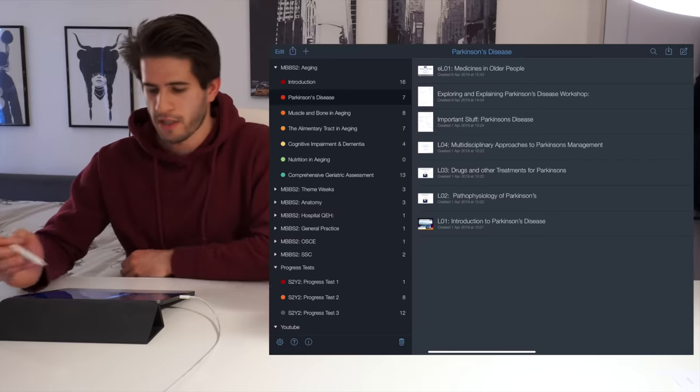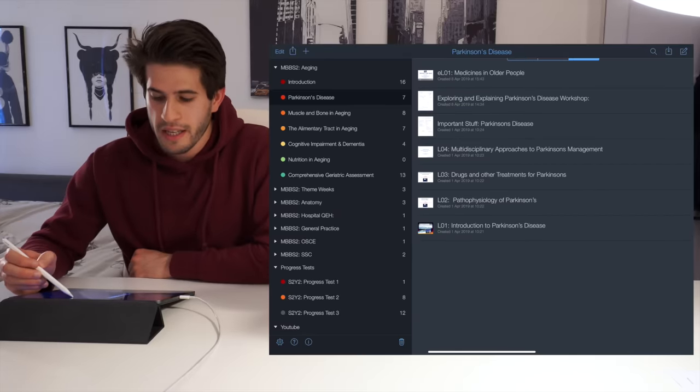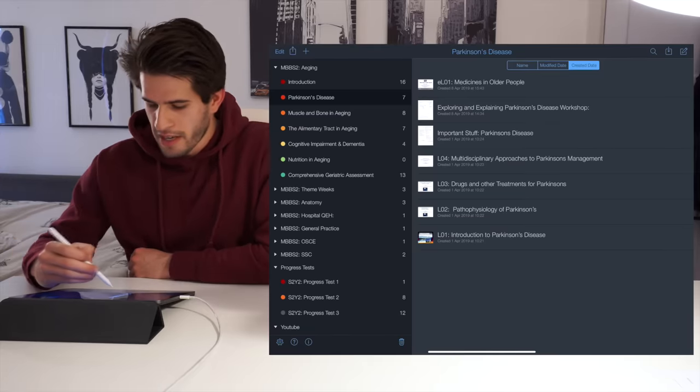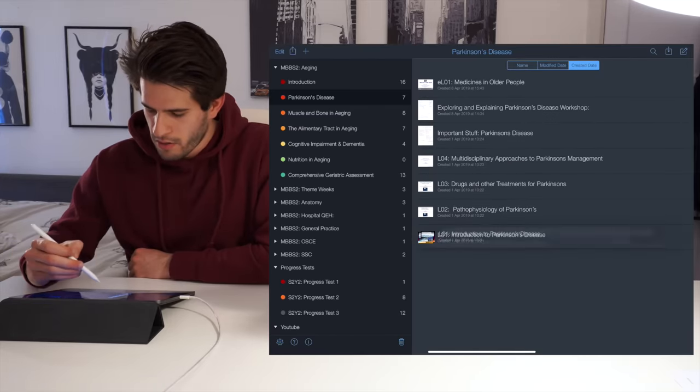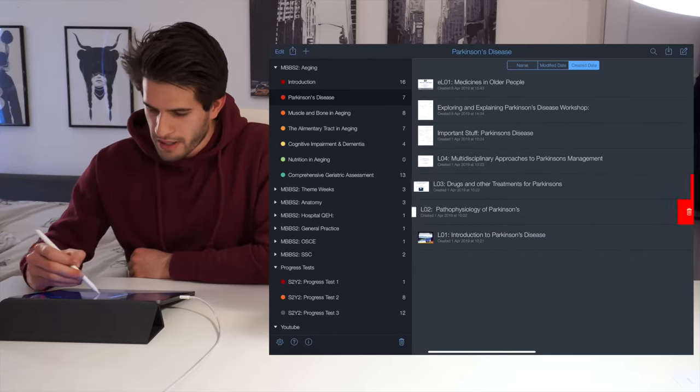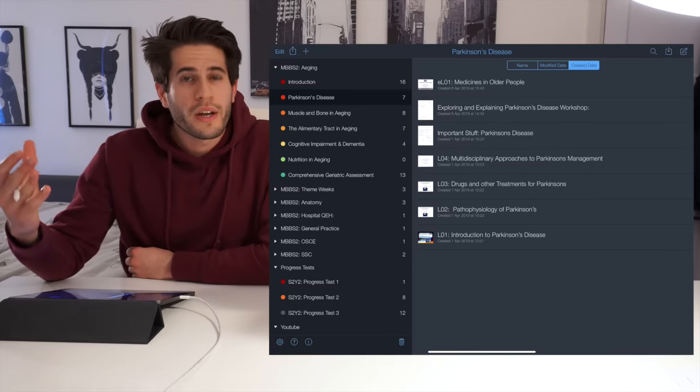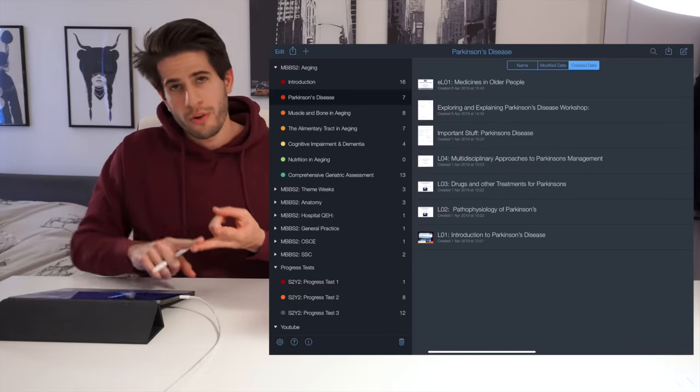So let's take Parkinson's disease for example. Over here you can see ELO1. So that stands for e-learning or online learning number one. And here I have lecture one at the bottom, lecture two, lecture three, lecture four. And so this is an easy way for me to organize all the different lectures, tutorials, e-learning,